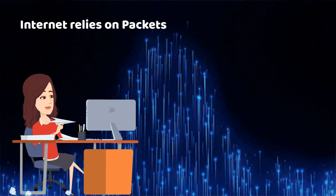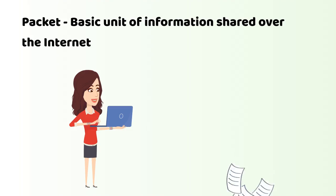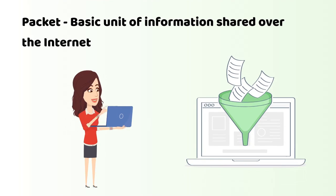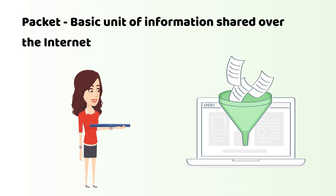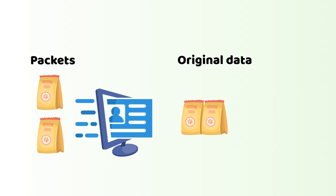If you are using the internet, you are dealing with packets. A packet is the basic unit of information that is being transferred over the internet. Any data sent over the internet is split into multiple smaller packets. These packets are then assembled back to recreate the original data at the destination device.